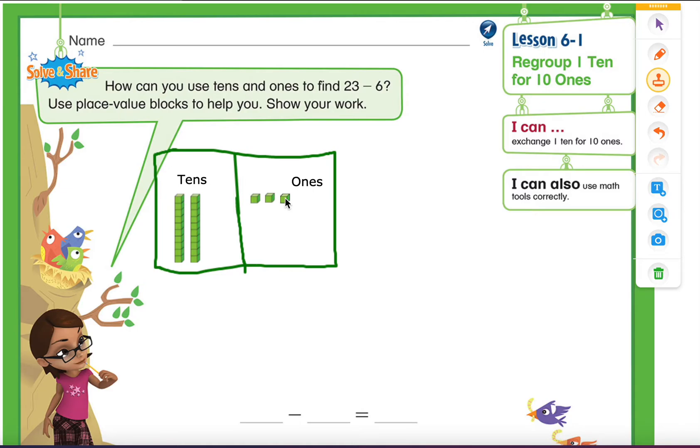Now, we need to take away 6 out of it. So here, we have 6 that we need to take away. But look at that. Over here, we only have 3 ones. We cannot take away 6 out of 3 ones. So what do we need to do? We need to regroup our tens.